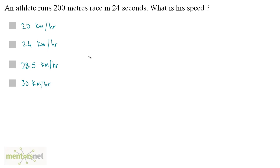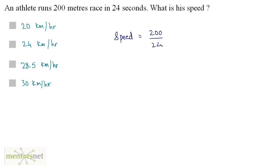An athlete runs a 200 meters race in 24 seconds. What is his speed? Well, you know the formula for speed, which is distance upon time. So speed is equal to the distance of 200 meters divided by the time of 24 seconds. So you get the speed in meters per second.